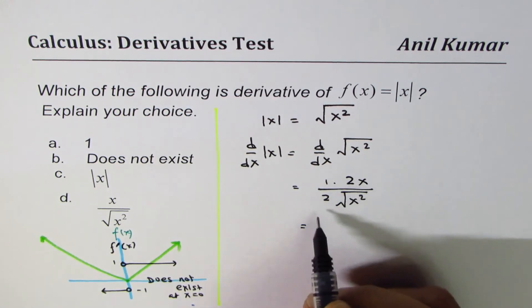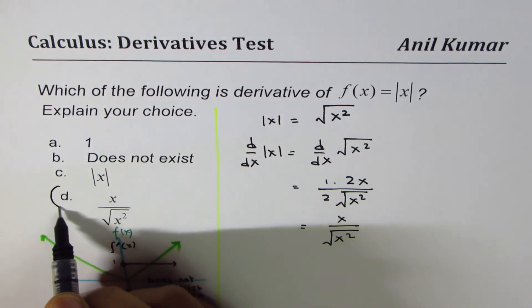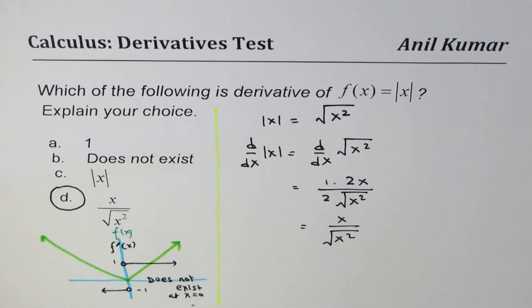Now, that gives us 2 and 2 cancel x over square root of x squared. Do you see that? So, the choice d is the right choice. Do you understand?